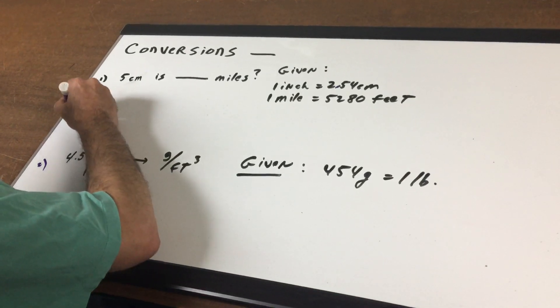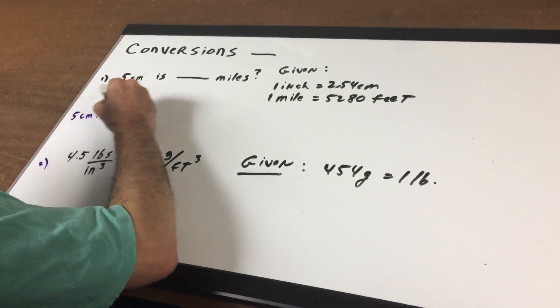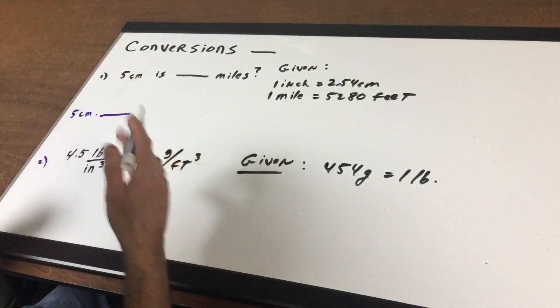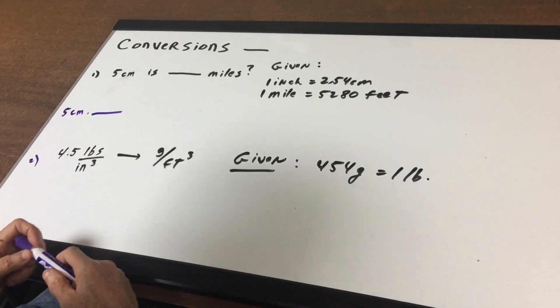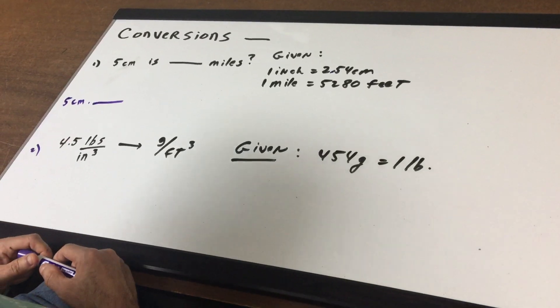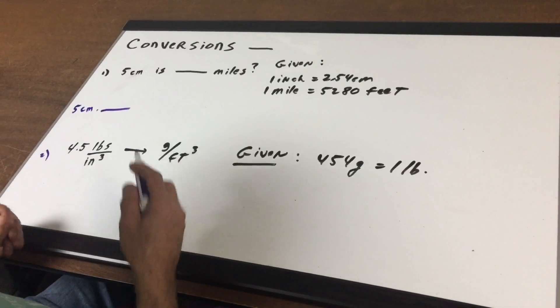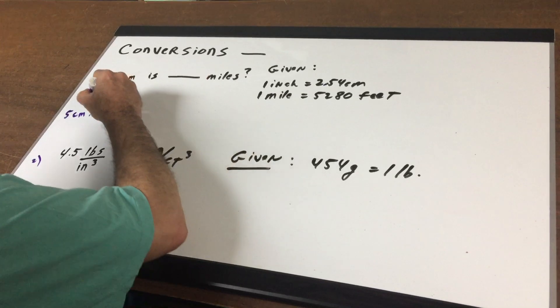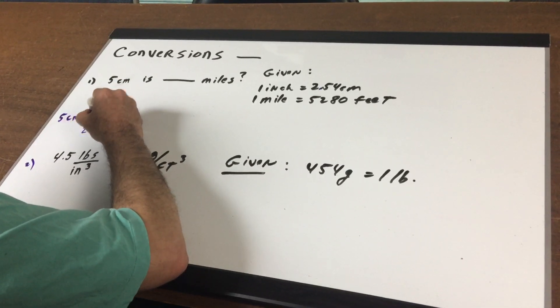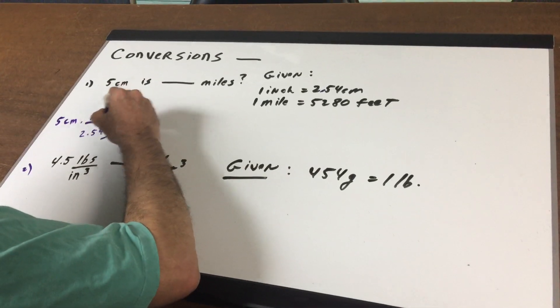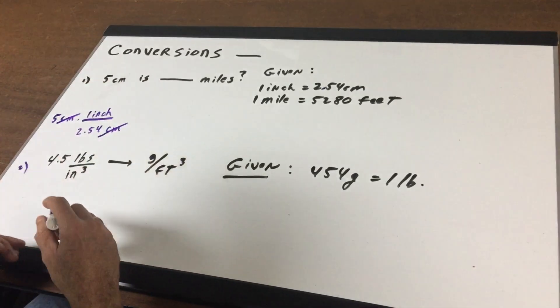So what I first do is write down 5 centimeters. Now is there a relationship between a centimeter and a mile? Alexandra, do you know how many centimeters is in a mile? No, I don't know. I don't know either. But I do know that one inch is 2.54 centimeters and centimeters crosses out.